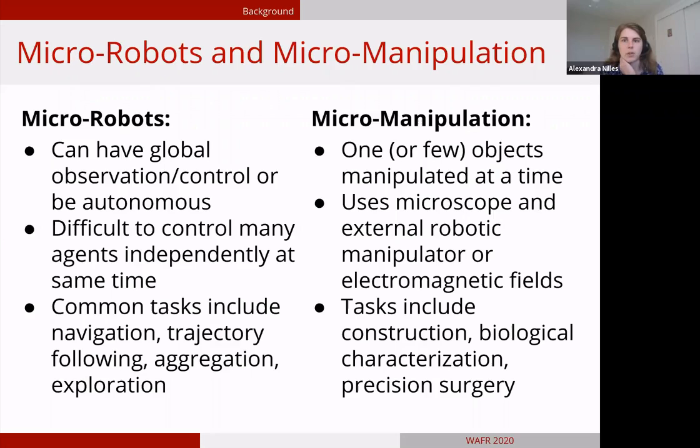Research into micro robotics and micro manipulation has been ongoing for a long time, although these two fields have been largely separate. On the micro robotics side, systems can either have some global observation and control mechanism, or the micro swimmers or micro robots can be completely autonomous and reactive. One challenge is that it's very difficult to control many agents independently at the same time. Common tasks for micro robots include navigating, following a trajectory, aggregating, or exploring their environment.